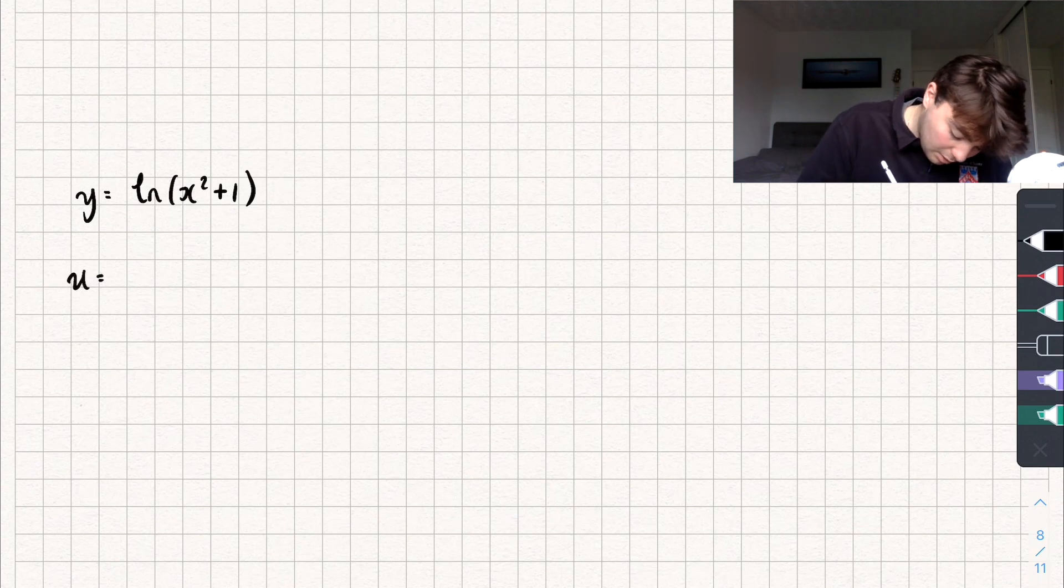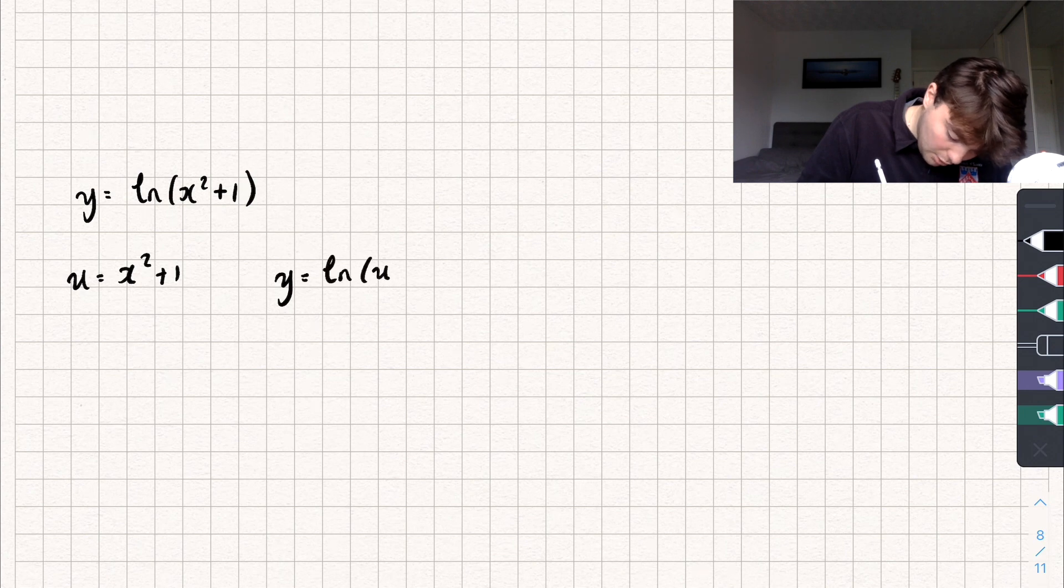So we can say that u is going to be equal to x squared plus 1. And y is just the natural log of u.